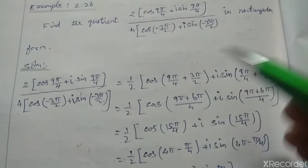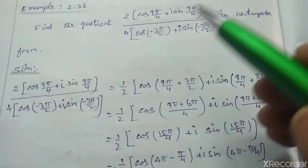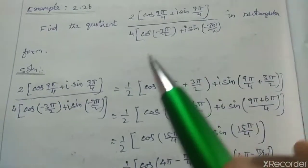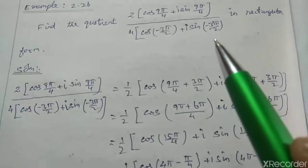Example 2.26: Find the quotient 2 times cos(9π/4) plus i sin(9π/4), divided by 4 times cos(-3π/2) plus i sin(-3π/2) in rectangular form.